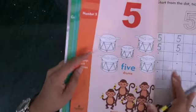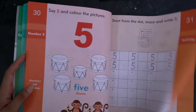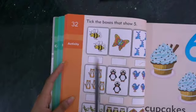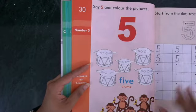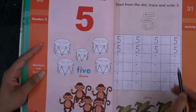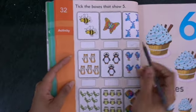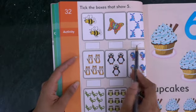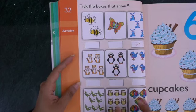If you open page number 30, 31, and 32, these three pages you need to complete. Same work will be there: coloring, following the patterns to write number five. And here also, in these boxes, you either color or tick the boxes that show five, which have five animals inside. Okay?